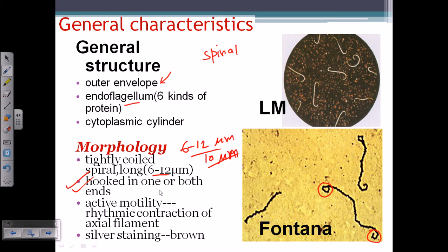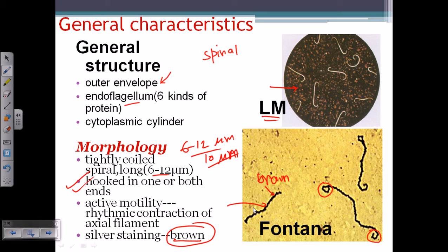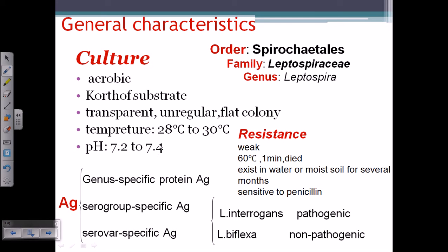We cannot stain them well with Gram stain — they won't take Gram staining effectively. So we use silver staining, which reveals them as brown in color. In light microscopy they are very hard to find, so we use Fontana staining, where we can see the brown Leptospira against the background, as shown here.